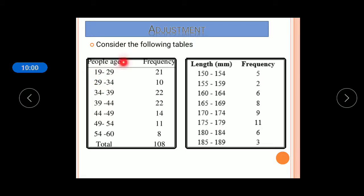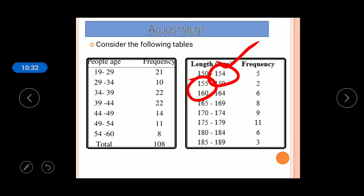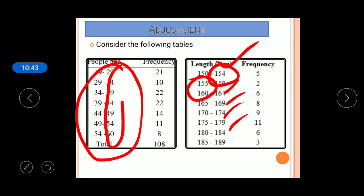In exclusive classes, the upper limit of the first class (e.g., 29) equals the lower limit of the next class, and that value is excluded from the first class and included in the second. In inclusive classes, values like 154, 164, 169 are all included within their own class. The process of converting inclusive to exclusive classes is called adjustment.